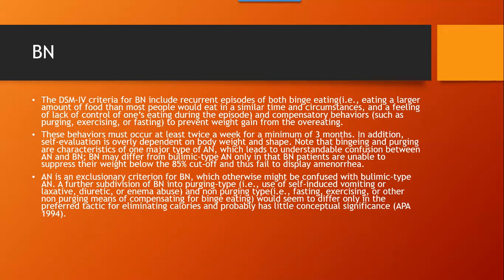These behaviors must occur at least twice a week for a minimum of three months to be considered a diagnosis. In addition, self-evaluation is overly dependent on body weight and shape. Note that binging and purging are characteristics of one major type of anorexia, which leads to understandable confusion. Bulimia may differ from bulimic-type anorexia only in that bulimic patients are unable to suppress their weight below the 85% cutoff and thus fail to display amenorrhea. Anorexia is an exclusionary criterion for bulimia.